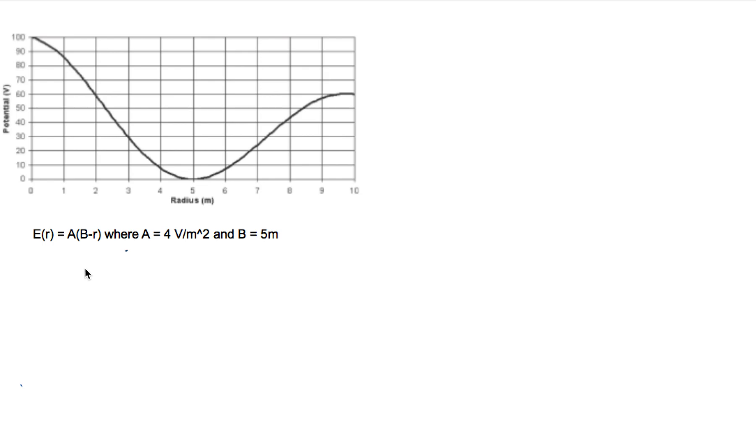So the features to look for are, the first thing I'm going to look for is zeros. So I'm going to look at E equals zero. Where does that happen? Well, that happens when A times B minus R equals zero, which means that happens when B minus R equals zero, or when R equals B, which is five meters. So this equation tells us that R equals five meters gives us E equals zero.